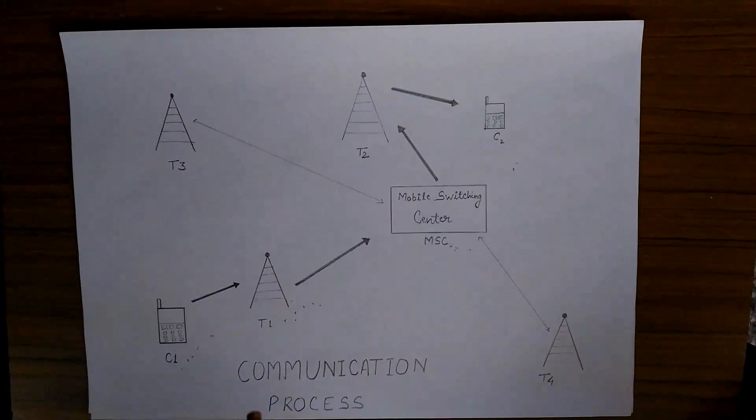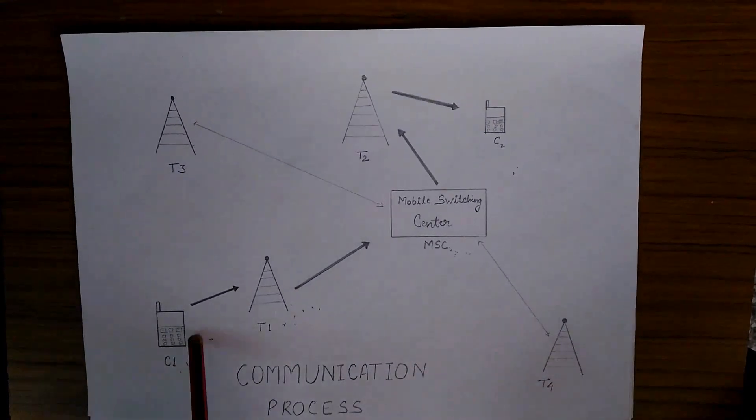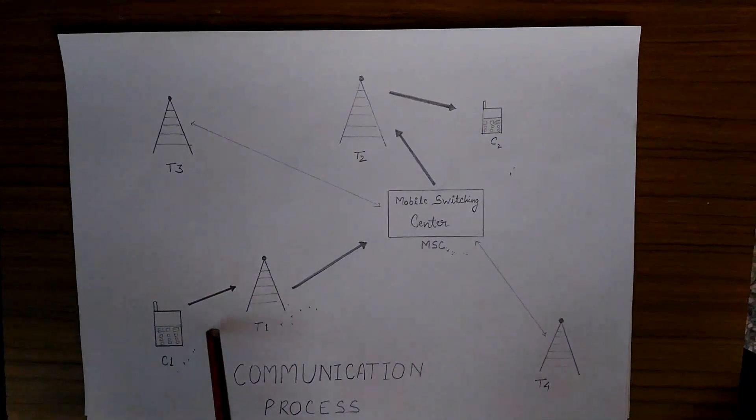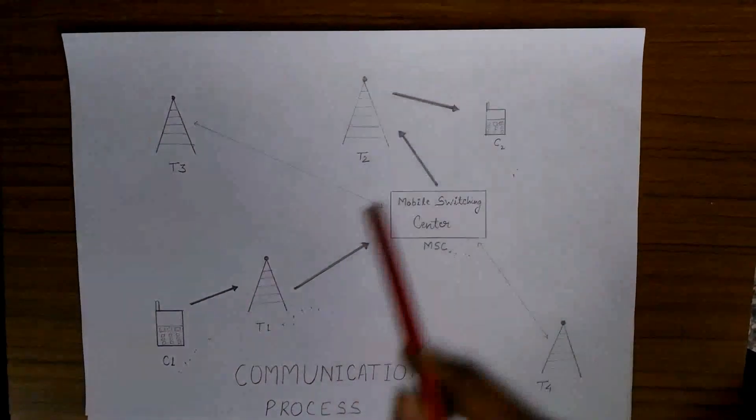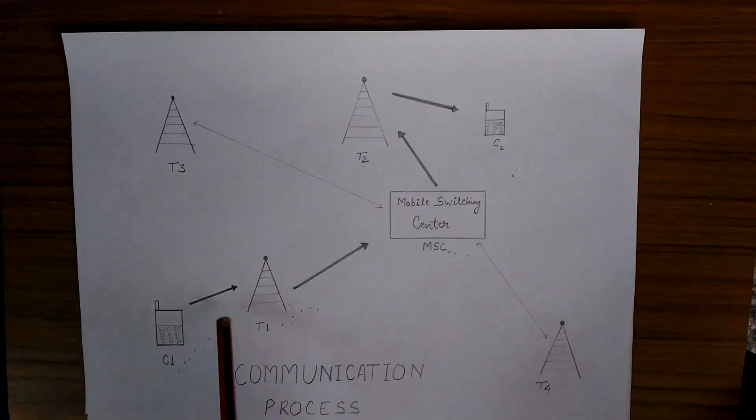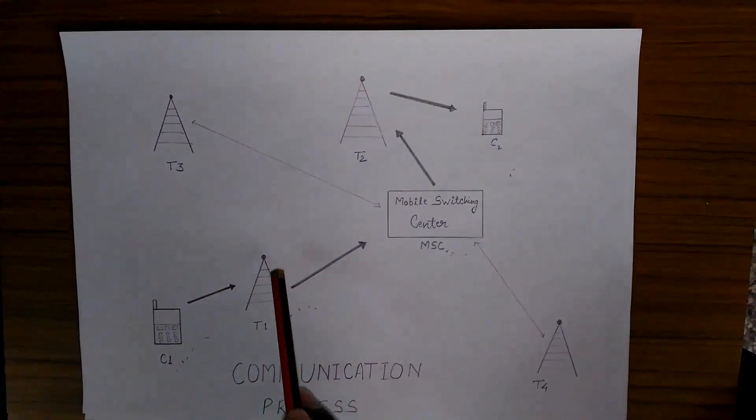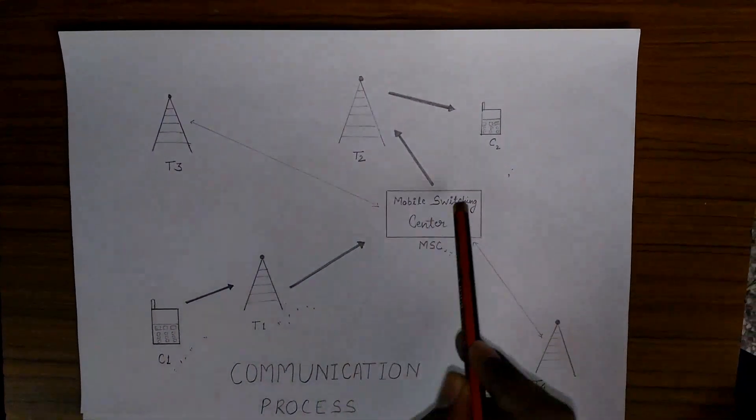Now let's see how a basic communication process takes place. Suppose you have a cell phone C1 and you are calling your friend who has cell phone C2. Whenever you call, your information is sent to the nearest base station, and that base station sends the information to the mobile switching center.